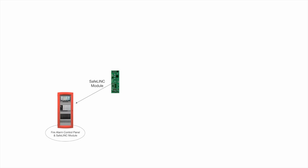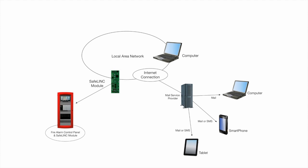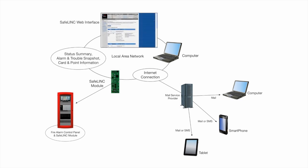Safelink is an optional card that can be installed into a Simplex 4100ES, 4010ES, or 4100U panel. The Safelink card provides an interface for the connection of the panel to the site local area network. Safelink uses the LAN to establish a secure connection to the internet. Using that connection, Safelink sends email and SMS format alarm and event notification messages to a user's computer, smartphone, or tablet. Safelink also allows users to securely log into the Simplex fire alarm panel and review its status using standard browser software.